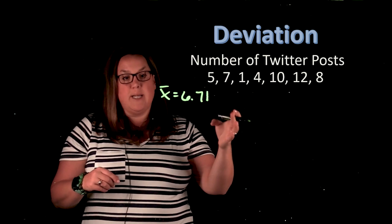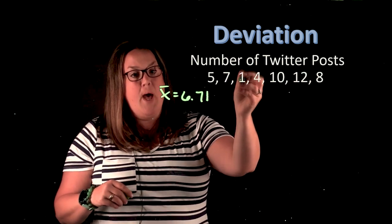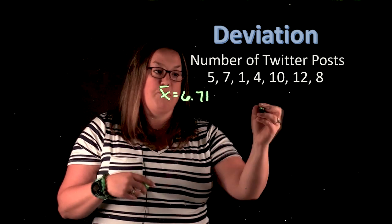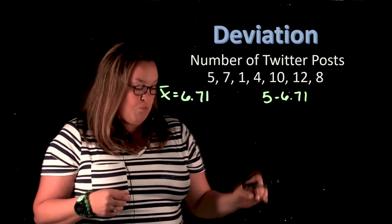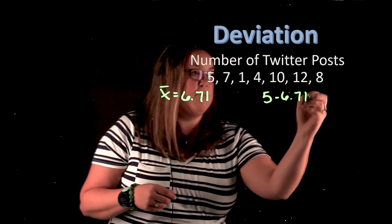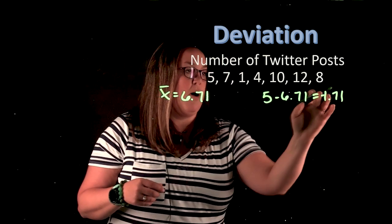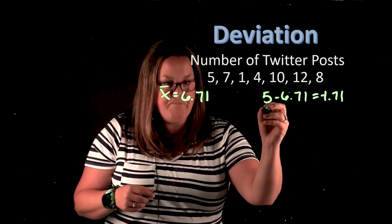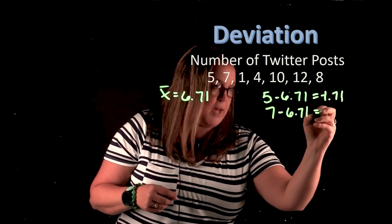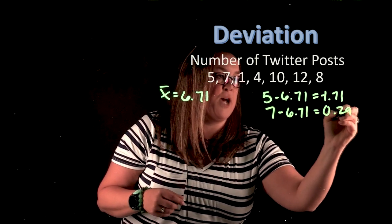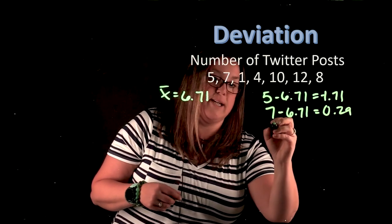So now if we were to calculate deviations, I'm going to do that for each of these observations. So x sub i minus x bar, or each observation minus the mean. So I have 5 minus 6.71. That's that first observation. And that comes out to be negative 1.71. My second observation is 7, and I'm still subtracting the mean from that. So that comes out to be 0.29. Again, negative means that it's below the mean. Positive means that it's above the mean.